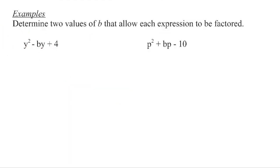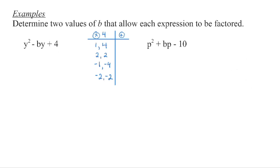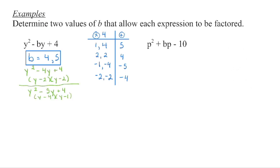We're now given a trinomial and asked to determine two values for b that would allow this to be factored. We know we need two numbers that will multiply to 4 and then add to that b value. We set up a table. Factors that multiply to 4: 1 times 4, and 2 times 2. Because this is a positive 4, both values can be either positive or both can be negative. Adding them up, we see this is a negative b, so we want positive values in here — our choices are positive 4 or positive 5. We can check: if we put a 4 in place of b, we can factor it; and if we put a 5 in place of b, we can also factor it.